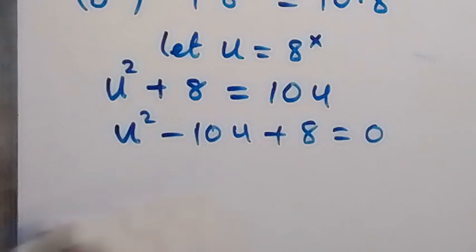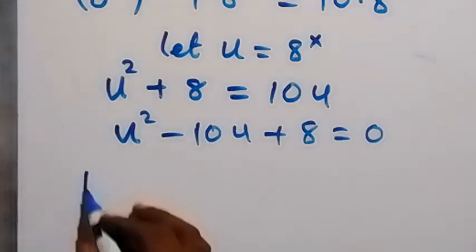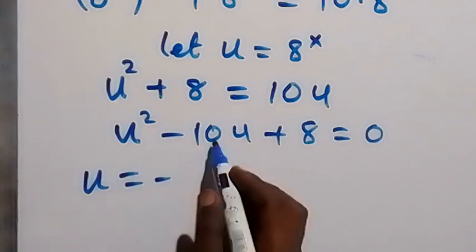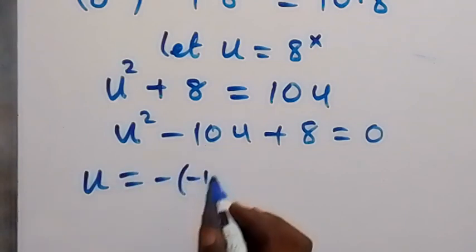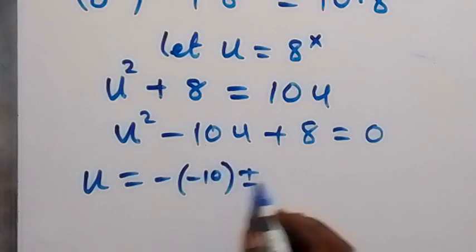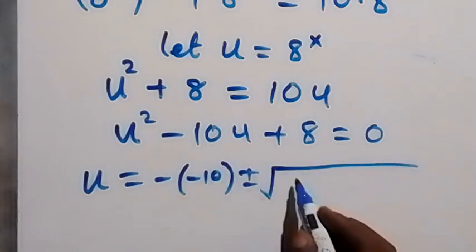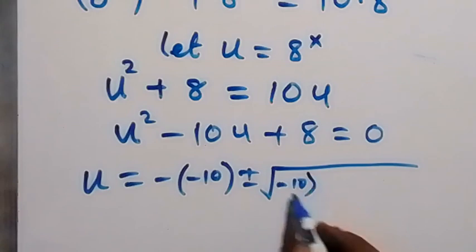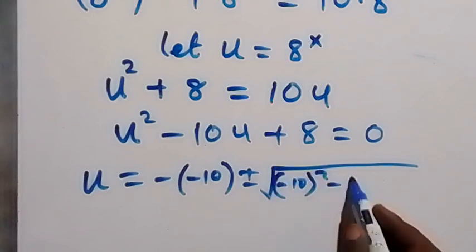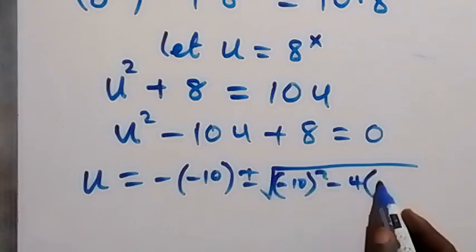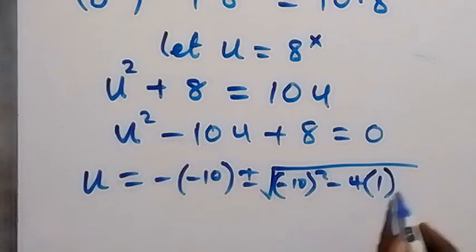And from here we can solve this quadratic equation by using the formula method. We have u equals to minus b, and b is minus 10, so minus minus 10 plus or minus square root of b square, that's minus 10 square, then minus 4ac. a is 1, then c is 8.